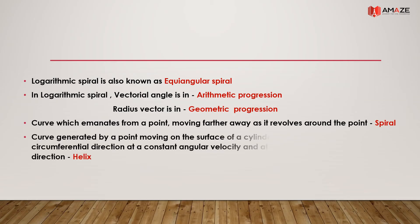A curve generated by a point moving on the surface of a cylinder or a cone in the circumferential direction at a constant angular velocity and at a uniform rate along the axial direction is called a helix.